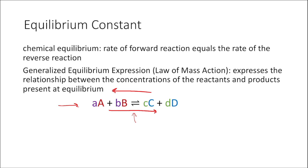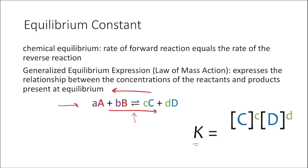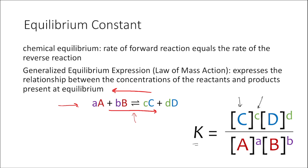When considering a chemical reaction at equilibrium, we can write an equilibrium expression. This is derived from the law of mass action, which expresses the relationship between the concentrations of the reactants and the concentrations of the products present at equilibrium. K is equal to the concentration of each product raised to its respective coefficient from our balanced chemical equation — the concentration of C raised to its coefficient times the concentration of D raised to its coefficient — divided by the concentrations of our reactants raised to the power of their respective coefficients.